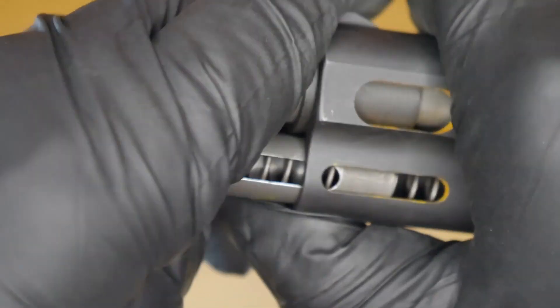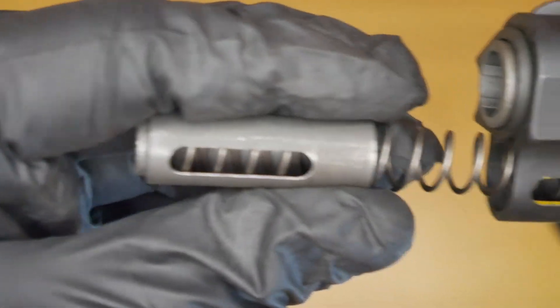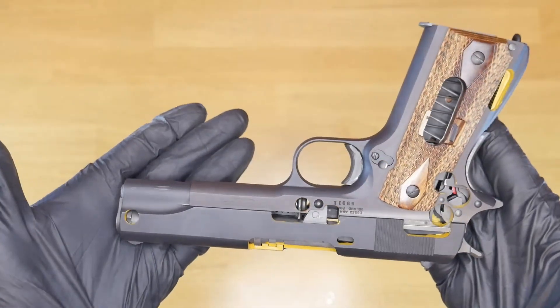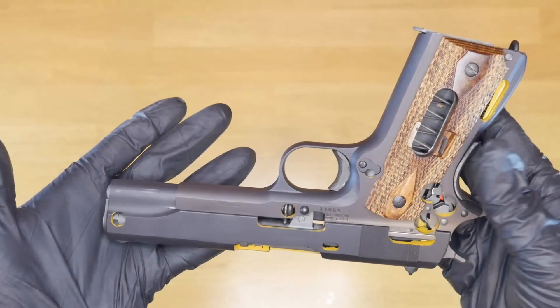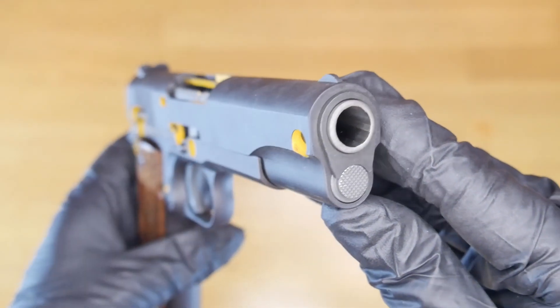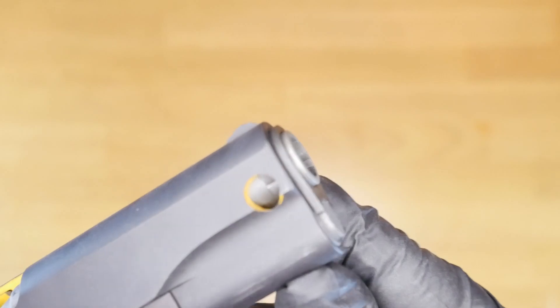Unfortunately Cylinder and Slide no longer keeps these in stock. However, I did contact Cylinder and Slide and they will make one for you. All you have to do is lay down a $20 deposit, provide them with a 1911, and contact them for their current pricing. Currently there's a year to a year and a half wait time.